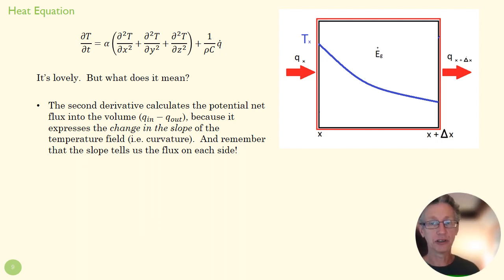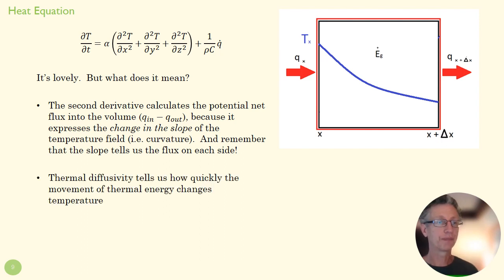And thermal diffusivity, as we talked about before, tells us: okay, if I have a big change in slope here, how much is that going to change the actual temperature? If I've got a big k and I've got a difference in slope, there's going to be a lot of movement of thermal energy. If I've got a small rho c, it's not going to absorb that energy very well and the temperature is going to go up. So this is a material component that tells us, given the shape of the temperature field, how much is it going to actually move thermal energy and raise the temperature of a given point.